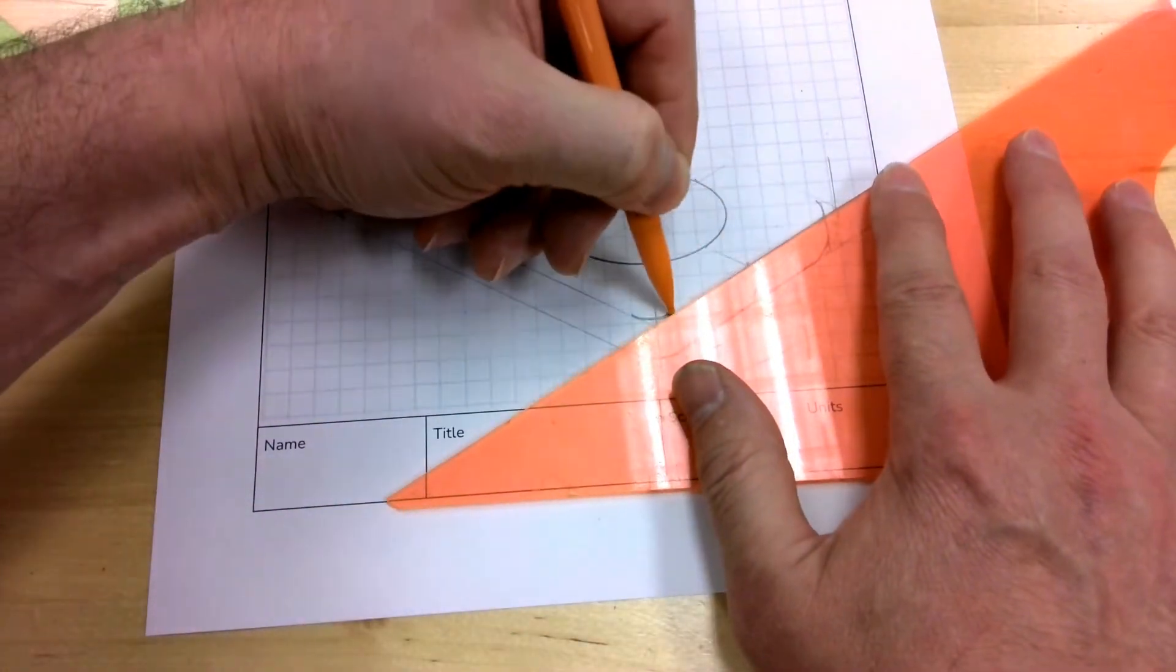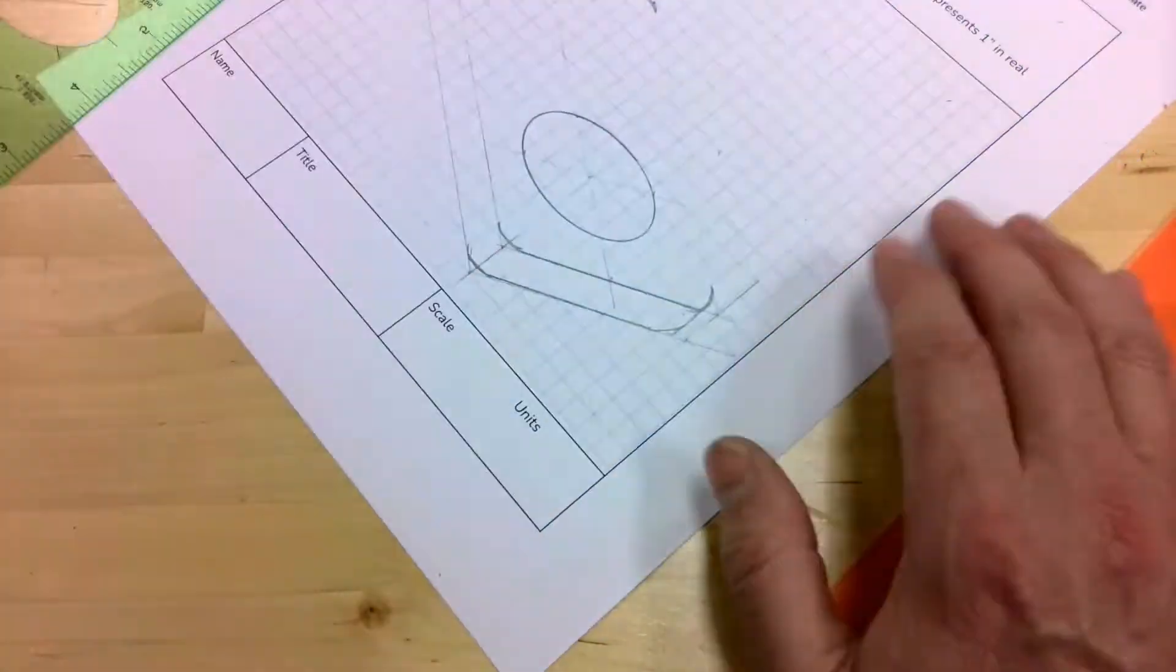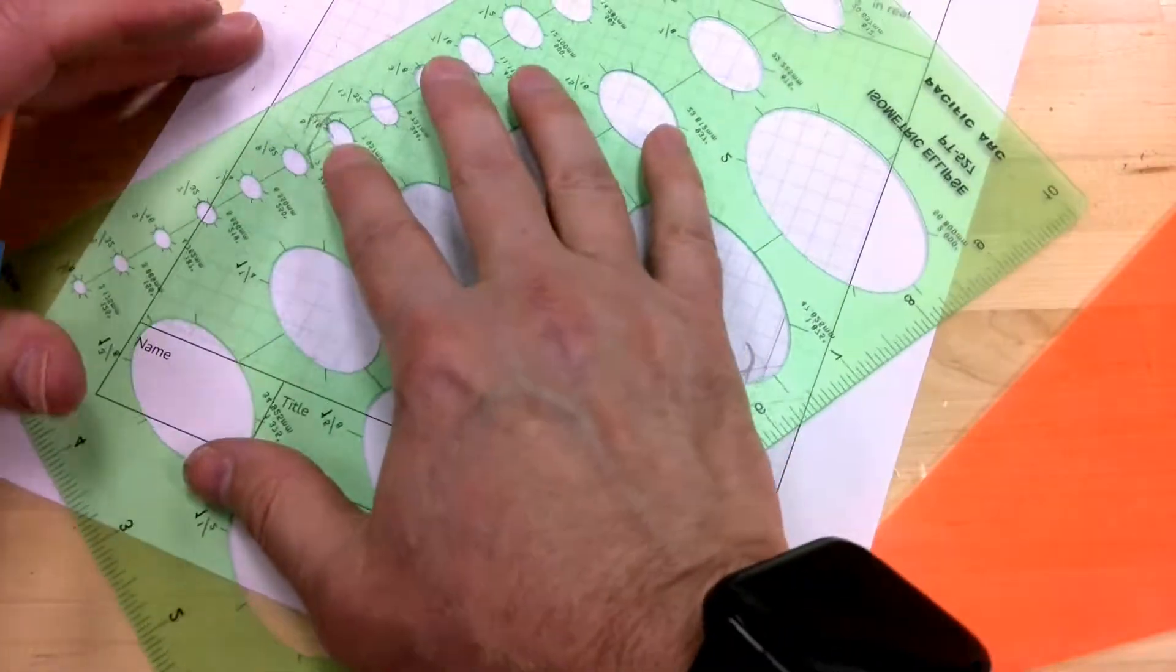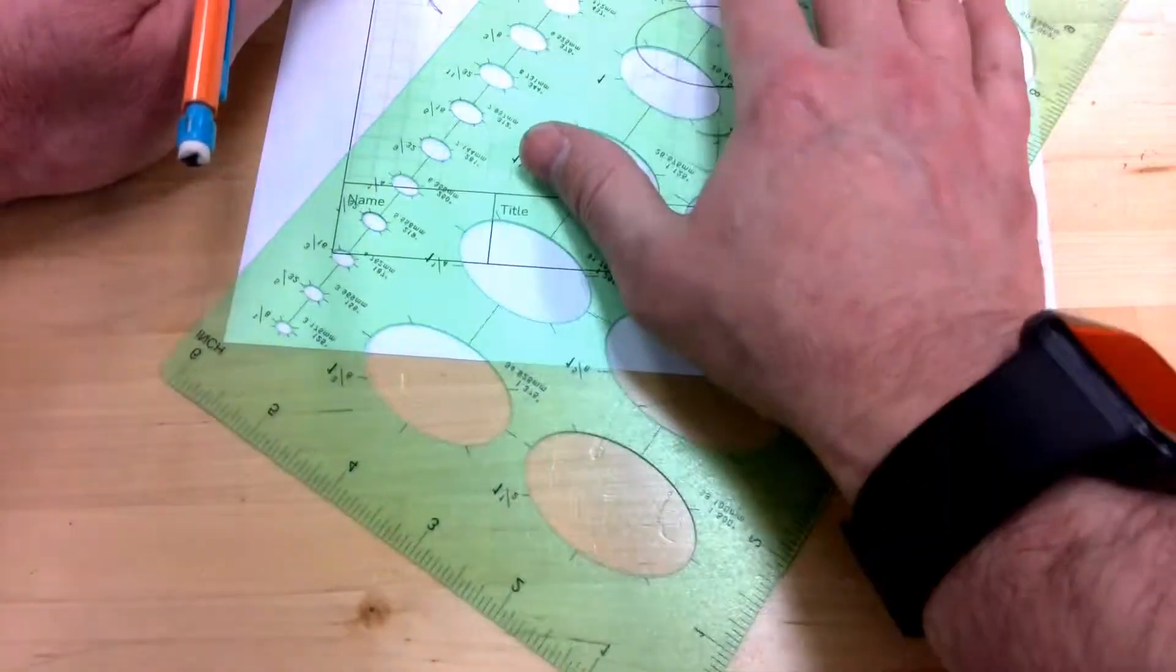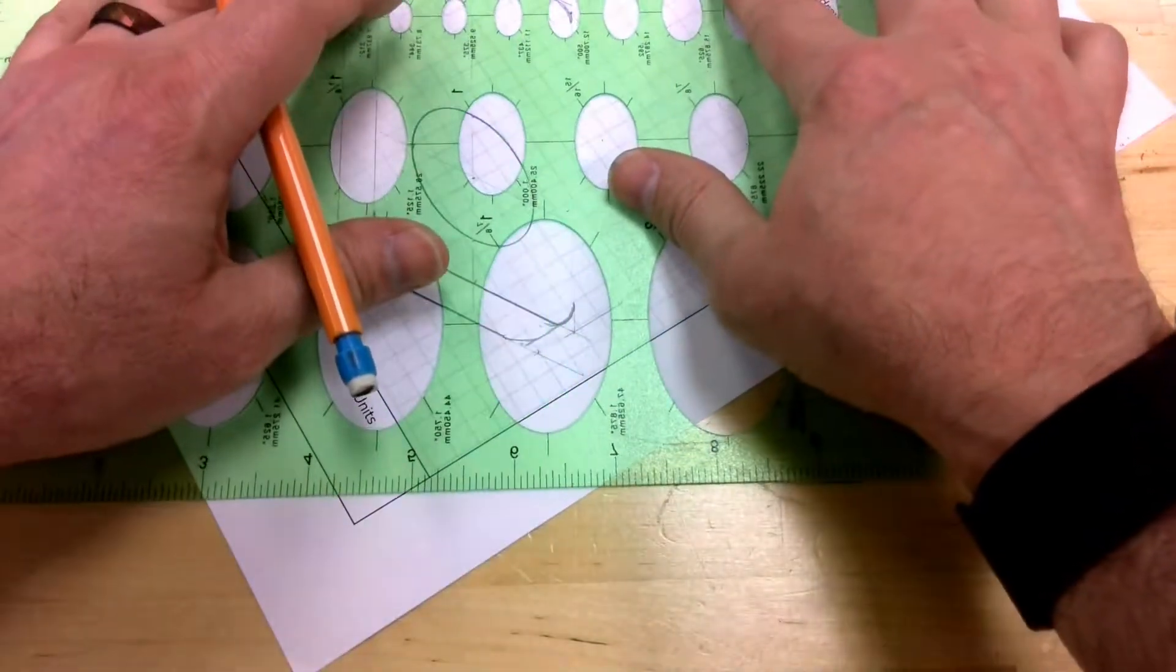And then I can fill in my lines in between. If you needed to, you could use the circle template as such, finding the right ellipse that would mark the circle of that size.